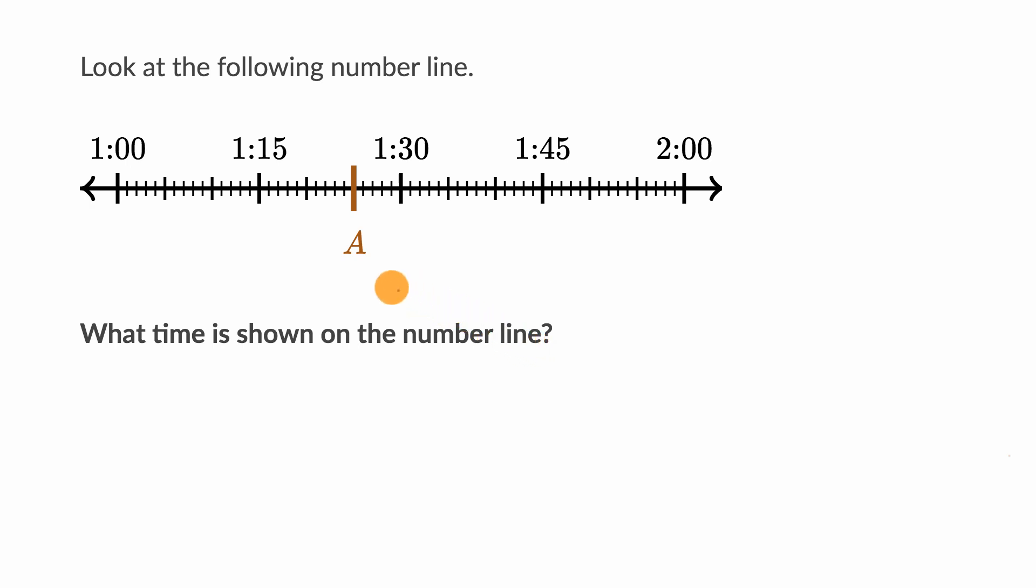All right, so the hour is pretty straightforward. We are past one o'clock but before two o'clock. So we know the hour is going to be one something, not two something because we haven't gotten to two o'clock yet. Now, what is the number of minutes after one o'clock? We have a hint here - it's going to be between 15 and 30.